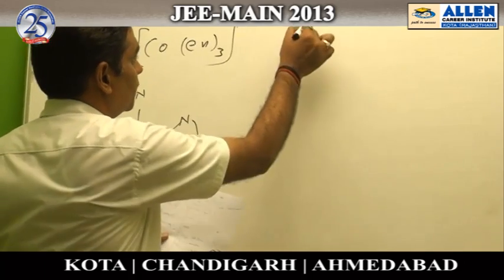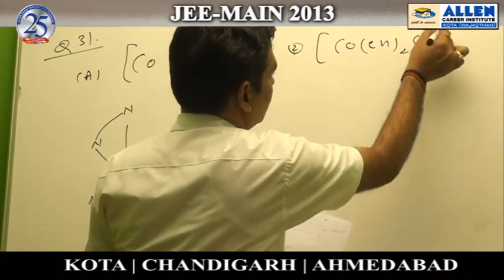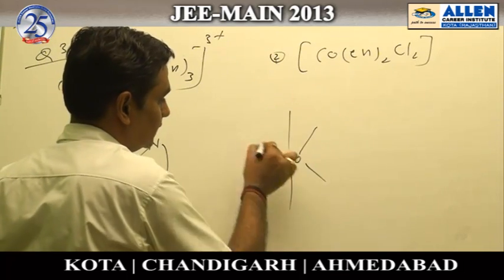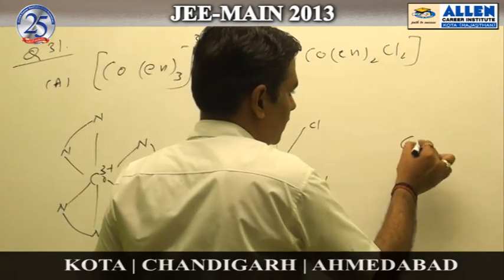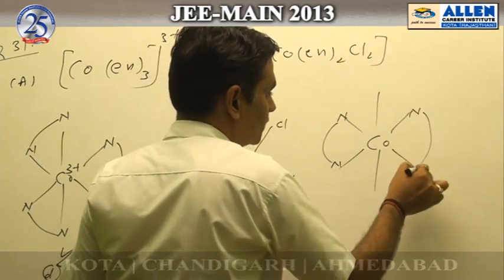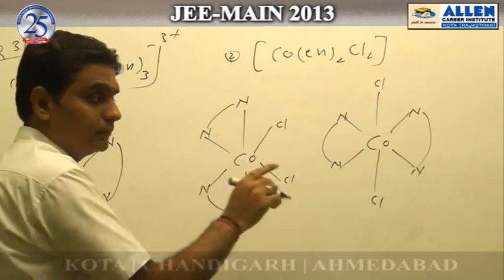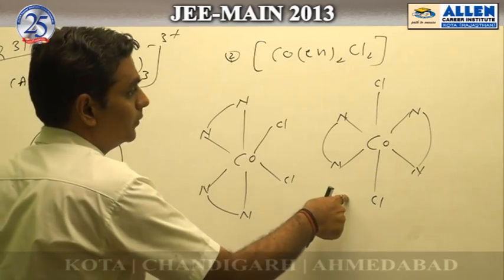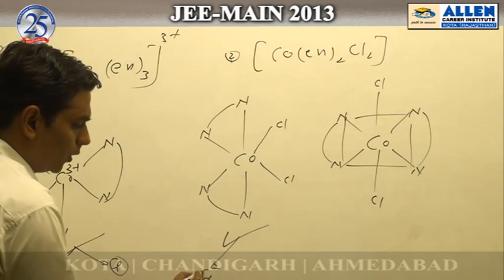Option B, [Co(en)₂Cl₂], exists in two geometrical isomeric forms: cis and trans. The trans form is optically inactive because it has a plane of symmetry, but the cis form does not have a plane of symmetry, so it is optically active, existing in D and L forms.